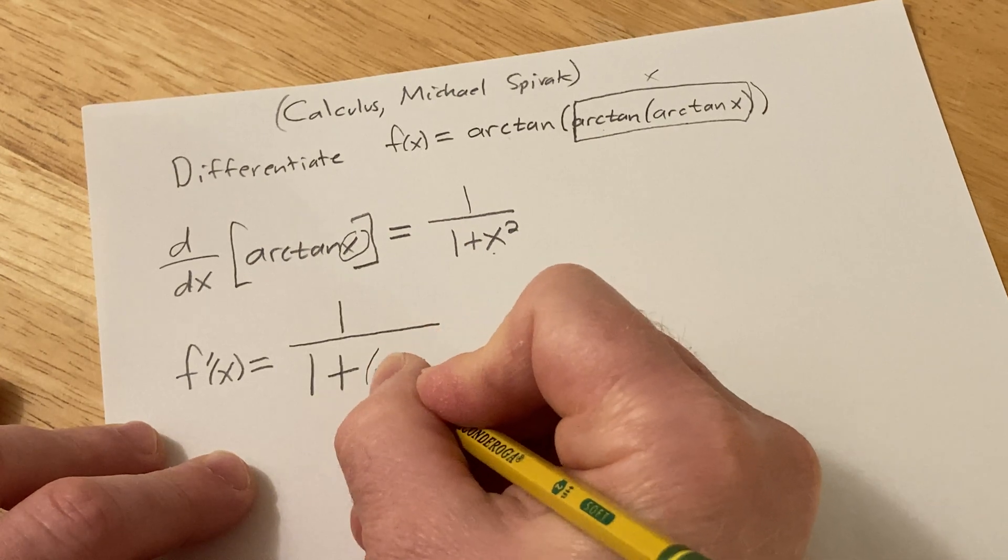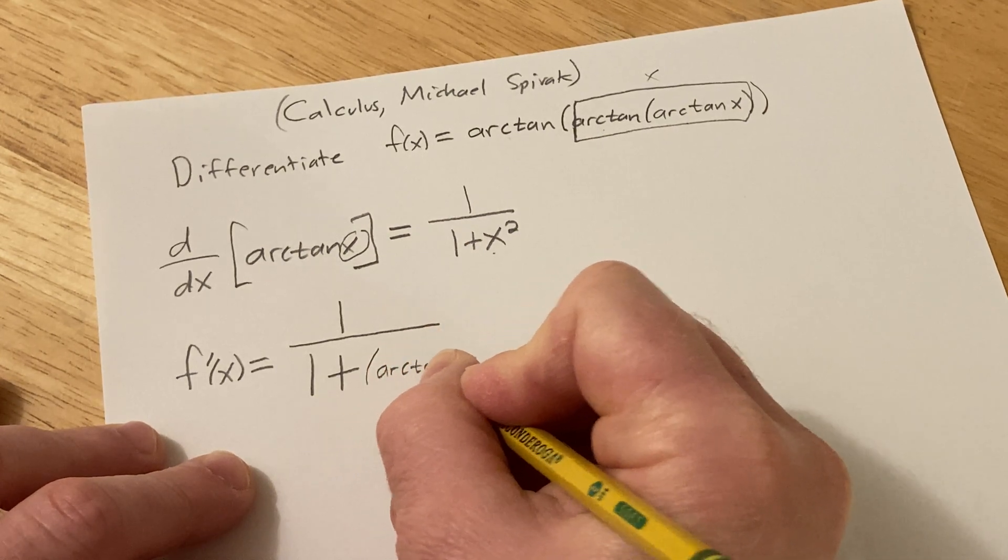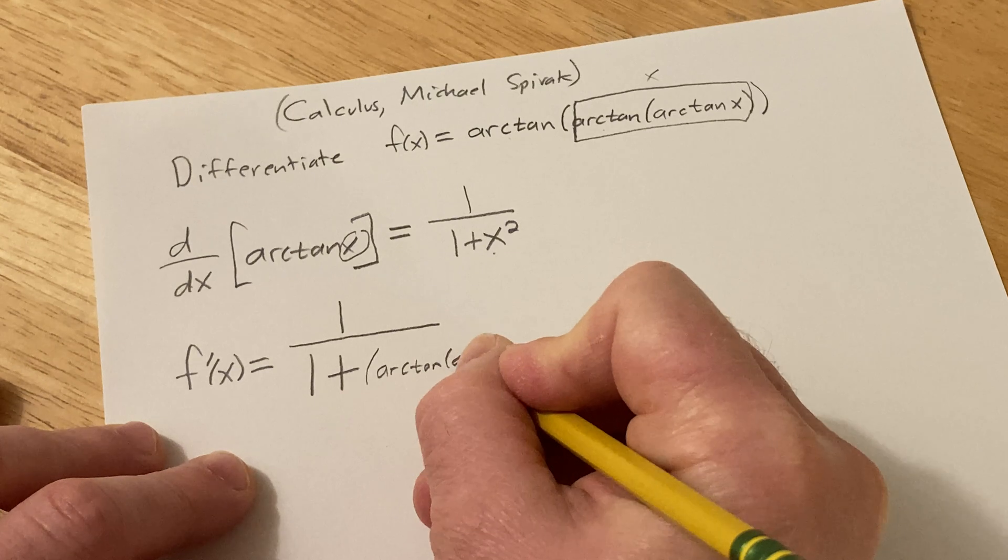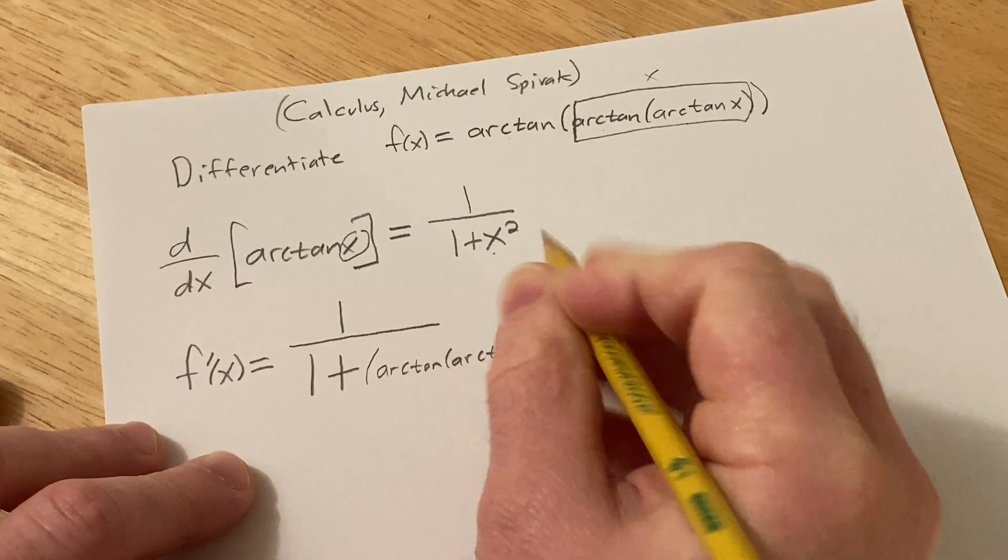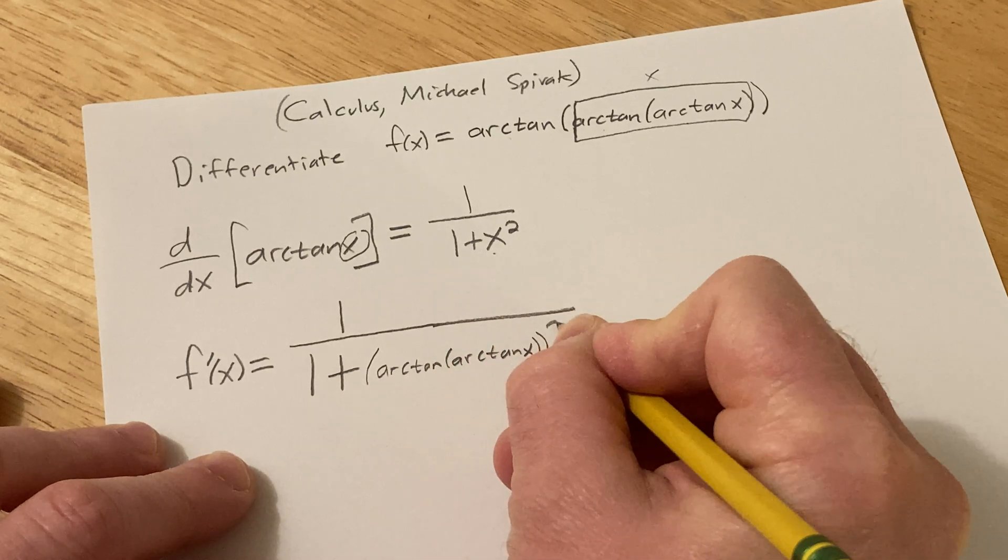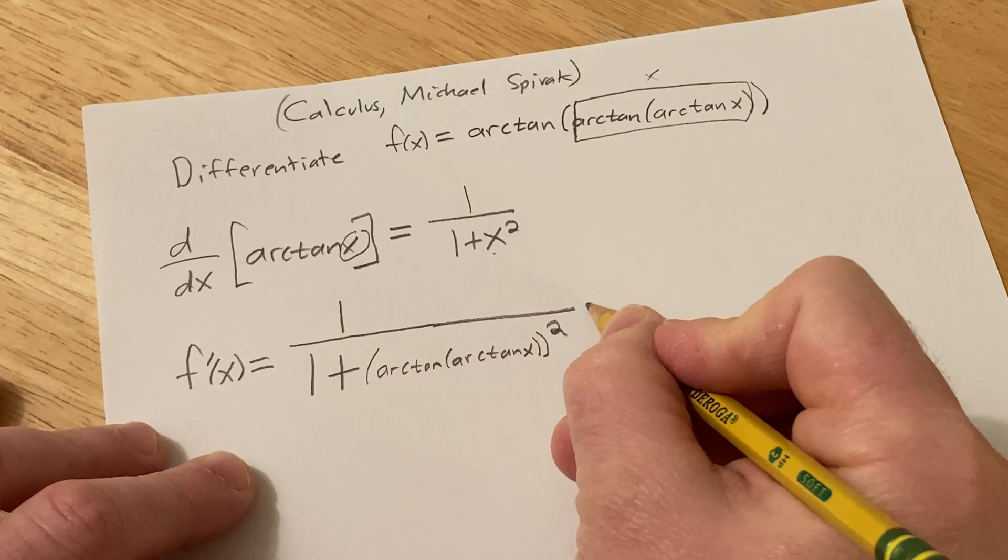So it'll be parenthesis arctangent of arctangent of x, parenthesis, parenthesis, and all of that is squared times...